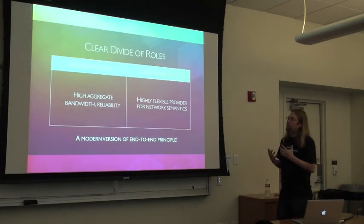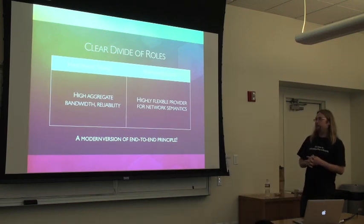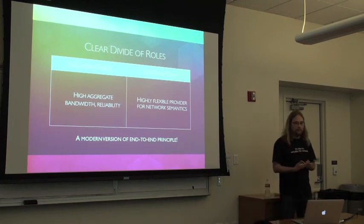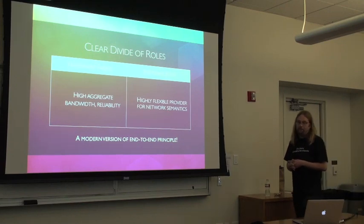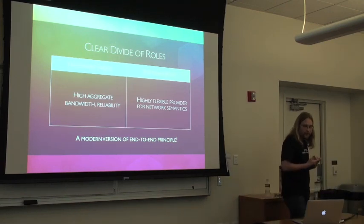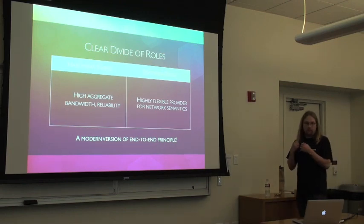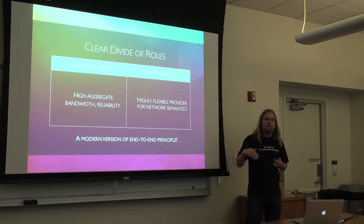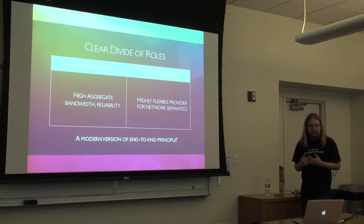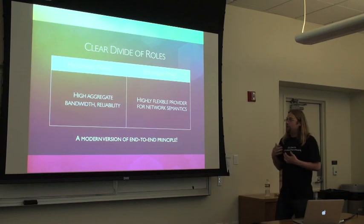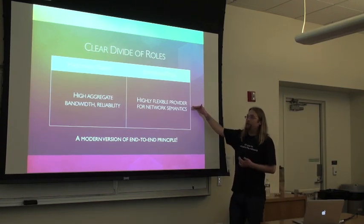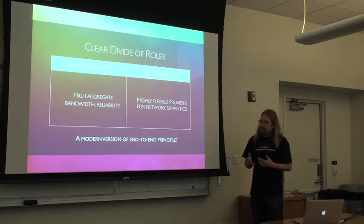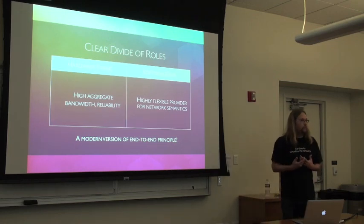So this gets us to a very clear divide of roles: software provides all the semantics, all the policies, all the interesting stuff at the edge, and hardware is just providing the high bandwidth for forwarding packets. And in some sense, this is a perfect marriage. Hardware is doing exactly what it's so great at. And software is doing what it's great at — it's adapting to user requirements that evolve quickly. I've seen software vendors for the data path release new features for the software data path every month. You can't think of a hardware vendor that would be able to do that with ASICs. And in some sense, this is just a modern version of the end-to-end principle — we are removing something from the middle of the network that doesn't have to be there, and we just move the function to the edge.